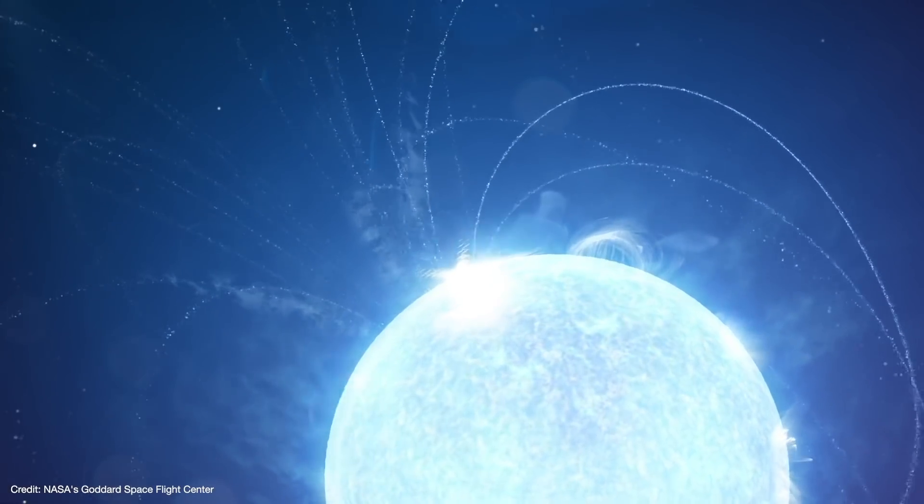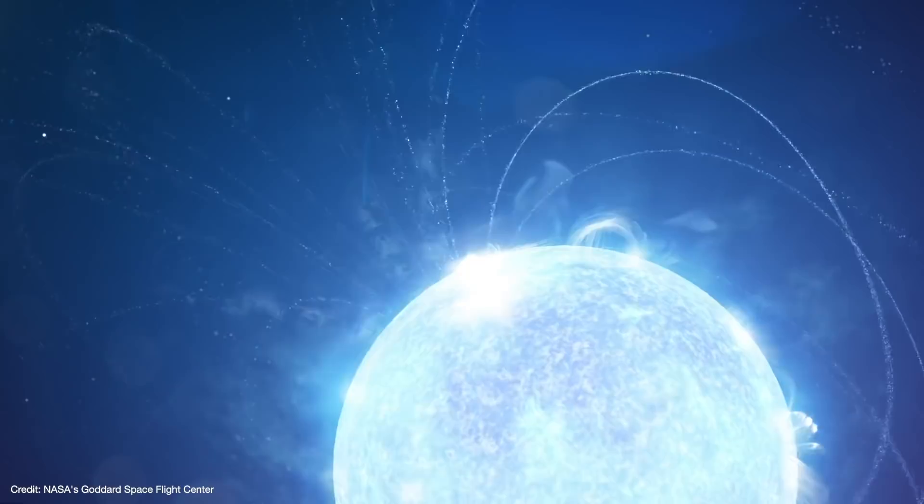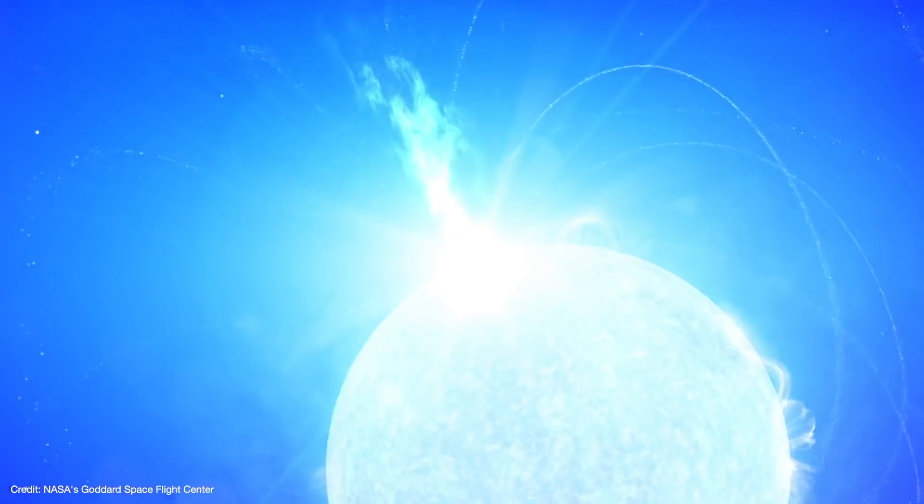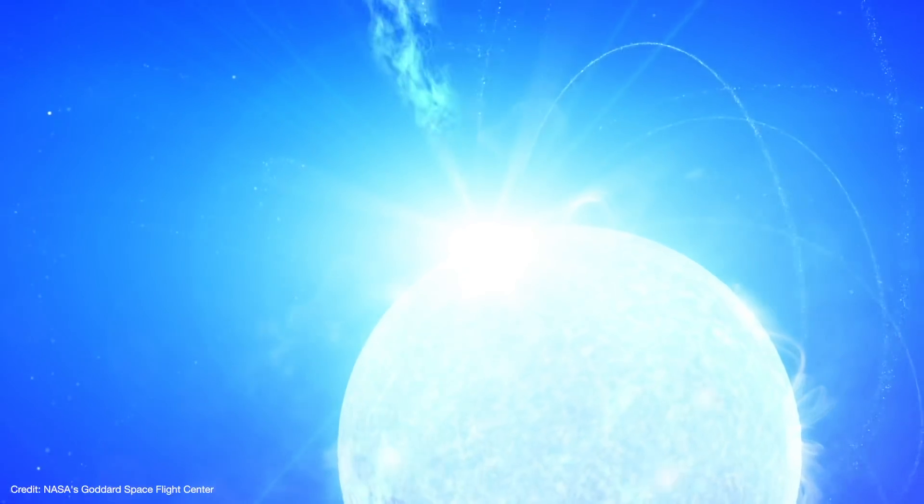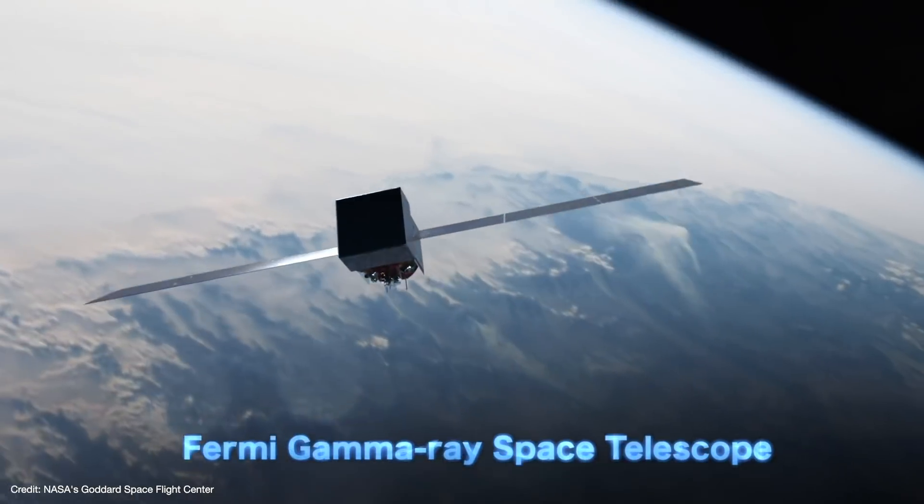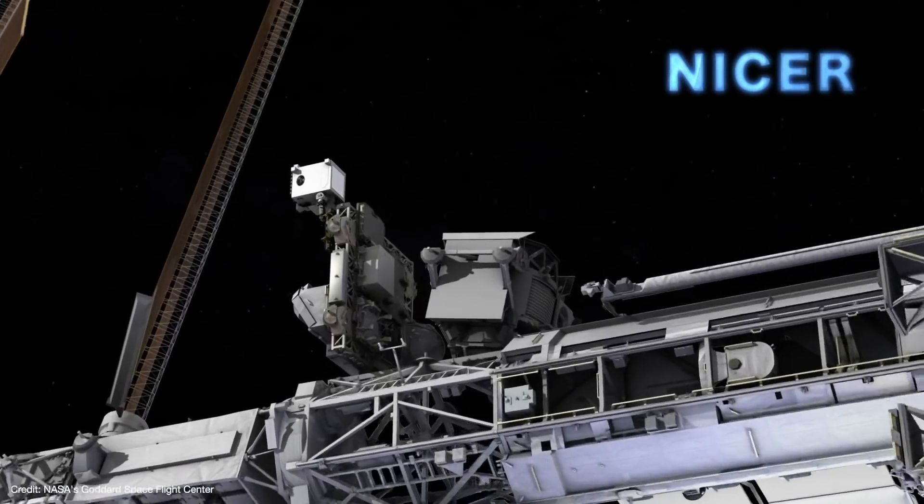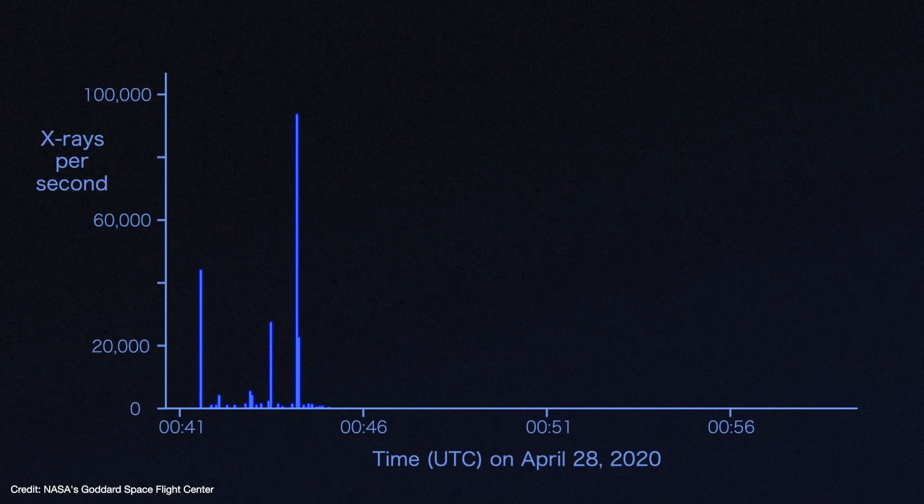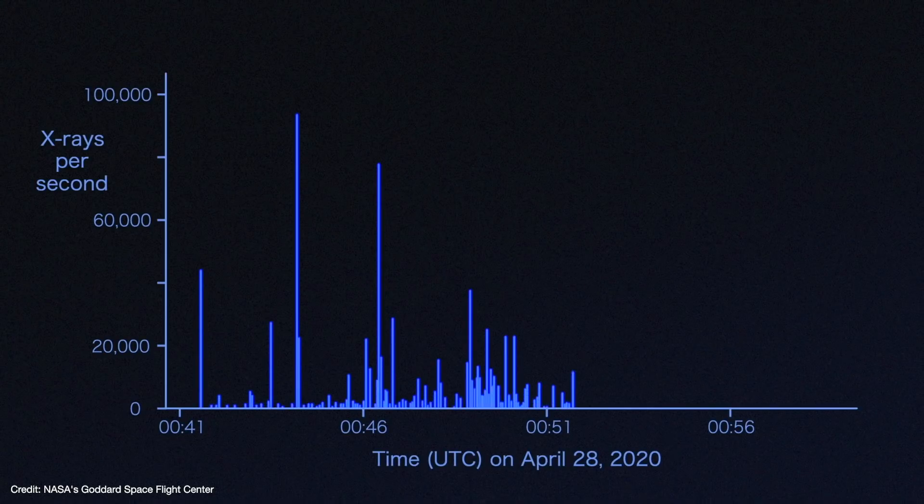On April 27, SGR1935 generated a storm of X-ray outbursts over several hours. It was detected by NASA's SWIFT satellite, the Fermi Gamma Ray Observatory, and the NICER instrument on the International Space Station. During the storm, NICER recorded more than 200 X-ray bursts in just 20 minutes.